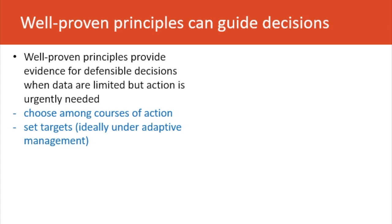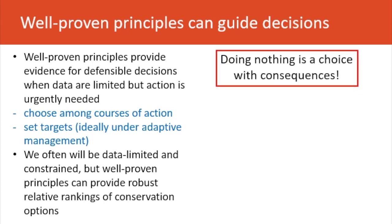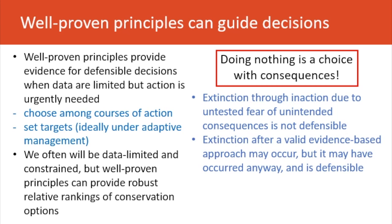Well-proven principles can provide the evidence we need to make defensible decisions, even when data are limited, and particularly when action is urgently needed. This allows us to choose among alternative courses of action and set targets. Doing nothing is a choice with consequences. If extinction arises through inaction because we had untested fears of unintended consequences, that isn't defensible. Extinction may occur after applying a valid evidence-based approach, but extinction may have occurred anyway — and this is much more defensible.